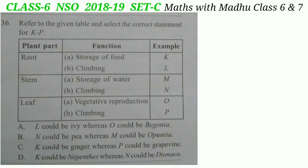Question 36: Refer to the given table and select the correct statement for K to P. Plant part, function, and examples are given. Ivy is a climber plant that climbs with the help of its roots. Begonia reproduces vegetatively with the help of its leaves. In a pea plant, leaf tendrils help in climbing. In opuntia, the stem stores water. In ginger, the stem is modified to store food. In grapevine, stem tendrils help it to climb. In Nepenthes, the leaf forms a pitcher, and in Dionaea, the leaf forms a trapping structure.